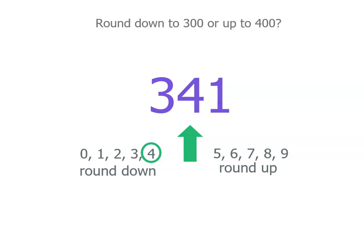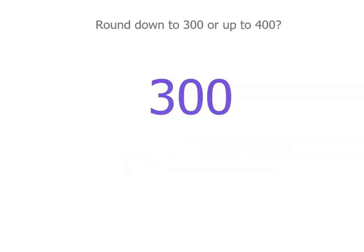By the way, the 1 in the units place — we don't even need to look at that. Because we're rounding to the nearest 100, we only look at the tens place to decide what to do. So we're rounding down to 300 because 341 is closer to 300 than it is to 400.